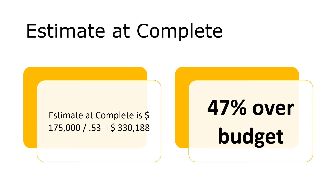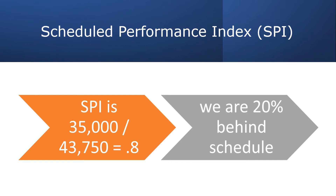While this is not the most accurate calculation, it is accurate enough to identify trends in time to take corrective action. Our Estimate at Complete is $175K divided by 0.53, which equals $330,188. We predict being 47% over budget by this calculation. The Schedule Performance Index, or SPI, compares earned value with planned value and is calculated by dividing earned value by planned value. Our SPI is $35K divided by $43,750, which equals 0.8 — so we are 20% behind schedule.